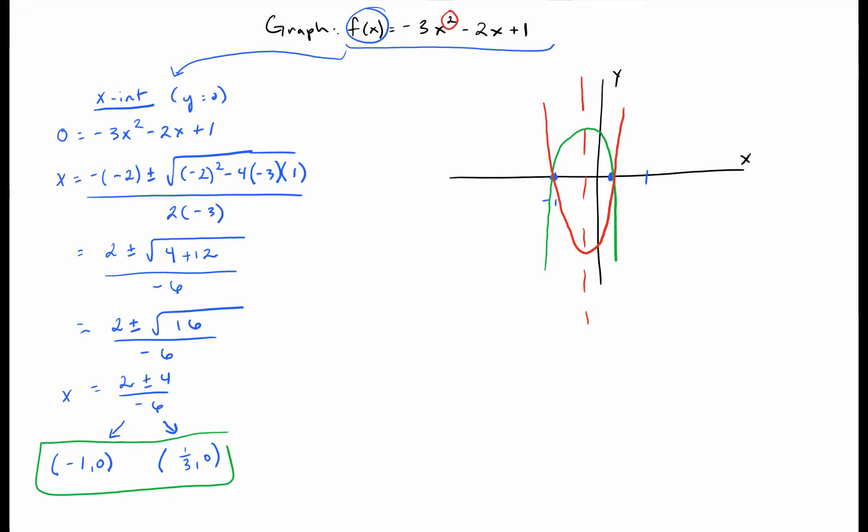So the vertex has to be directly between our two x-intercepts. How do I figure out how to get directly in between negative one and one-third? We're just going to find the average. So h equals negative one plus one-third divided by two.